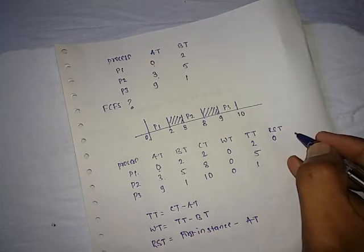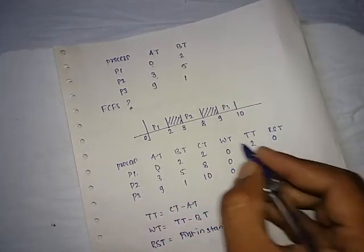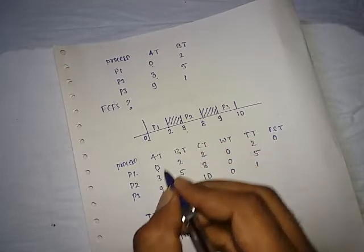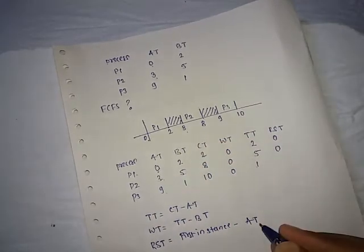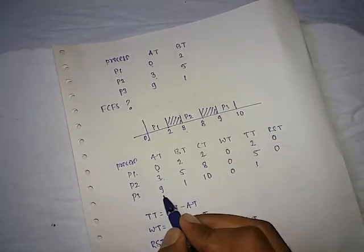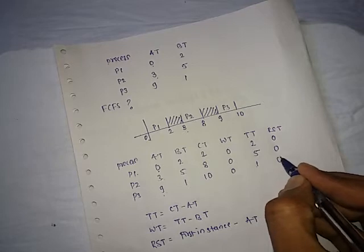For the P2 process, its response time is 3 minus arrival time of process is 3, so it is again 0. And for P3, it's 9, arrival time is 9, 9 minus 9, 0.